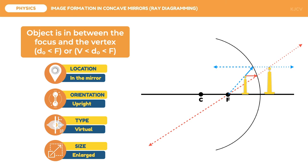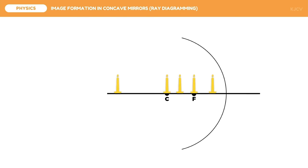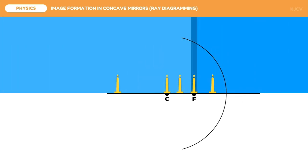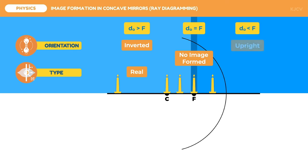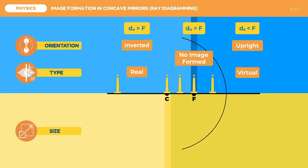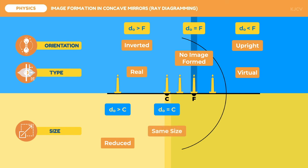After discussing the five possible object locations in front of a concave mirror, let us summarize the effect of object distance on the image's orientation, type, and size. The mirror's focus governs orientation and type: objects placed beyond or at F will produce inverted and real images, objects placed exactly on F form no image, and objects placed before F but after V form upright and virtual images. The center of curvature governs size: objects beyond C are reduced, objects at C are the same size, and objects before C but after V are enlarged.